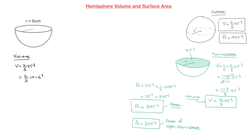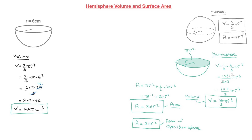If you have access to a calculator you could just type all of this in. For the sake of this tutorial, I'll go as far as we can without one. Since 6³ = 216, this equals (2 × π × 216) / 3. Now 216 and 3 have a common factor of 3 — indeed 216 = 72 × 3 — so we cross out the 3 and replace 216 by 72, giving 2 × π × 72. Since 2 × 72 = 144, the volume equals 144π cubic centimeters. That's the exact volume.